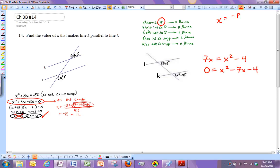X equals negative B plus or minus square root of B squared minus 4AC all over 2A. Okay. So let's plug in. In this case, A is 1, B is negative 7, C is negative 4.